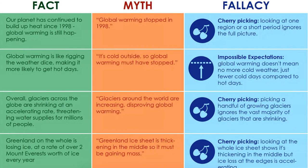Throughout our Denial 101X course, we debunk many of the most common myths that cast doubt on whether global warming is happening, humanity's role in causing climate change, and the impacts of global warming. You'll see the Fact-Myth-Fallacy structure as we explain the science, then examine how that science can get distorted. Each week we'll also release a short summary listing the fact, myth, and fallacy of each debunking.